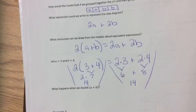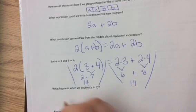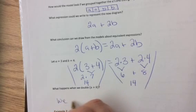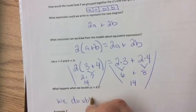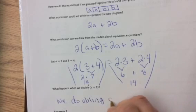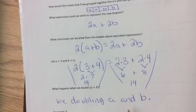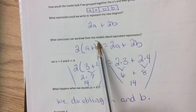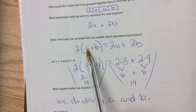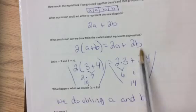What happens when we double A plus B? Well, we would end up doubling A and B. So in other words, when we have an expression like this, all you have to do is double both A and B to get 2A plus 2B.